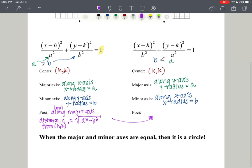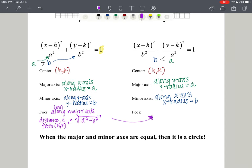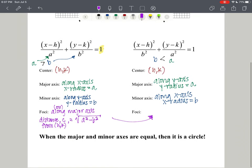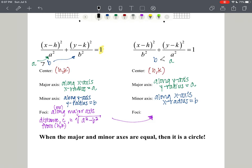Now when the major and the minor axes are equal, what do you think that's going to look like? Yep, that looks like a circle. So when the major and the minor axes are equal, we have got a circle.